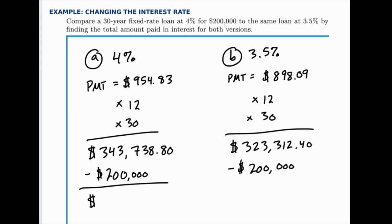The first loan has an interest payment in total of $143,738.80. The second one is $123,312.40.